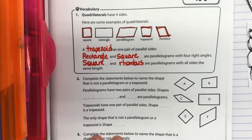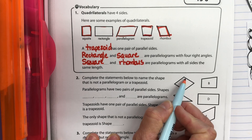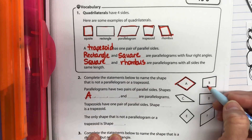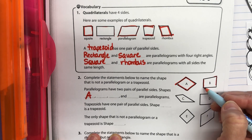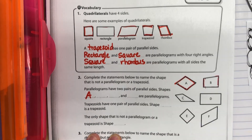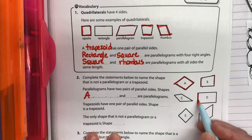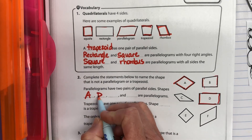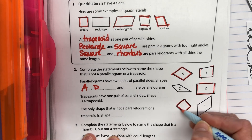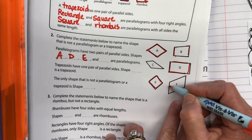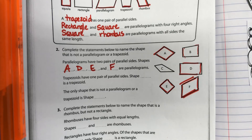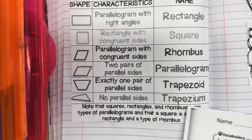Looking at the shapes: shape A — this side is parallel to that, and that is parallel to that, so A is definitely a parallelogram. Shape B — this is parallel to this, but this is not parallel to this line; the distance between them changes as it slants up, so B is not a parallelogram. Shape D — the top and bottom are the same, but the sides are definitely not parallel to each other. Shape E — these are parallel and those are parallel, so E is a parallelogram.